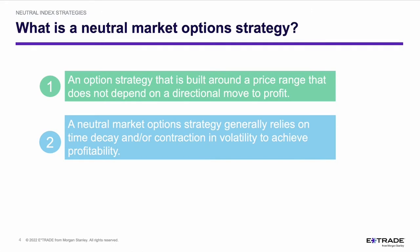A directional move with a neutral strategy may enhance the profit, but it is not dependent upon it. A neutral market option strategy generally relies on time decay and/or a contraction in volatility to achieve profitability. The iron condor is going to depend primarily on a contraction in volatility and time decay for its profit. Moving up or down is less relevant to the profitability, although it will factor in.